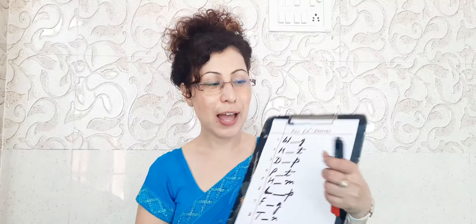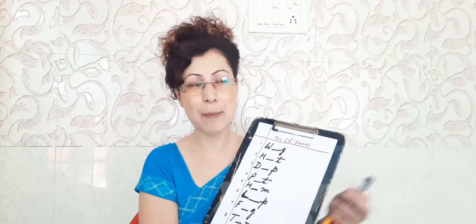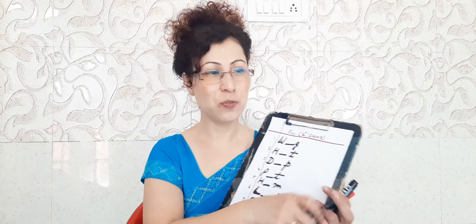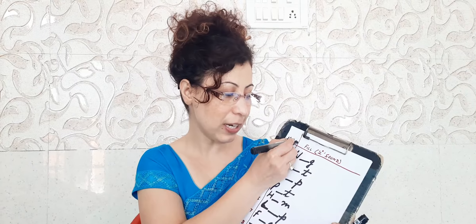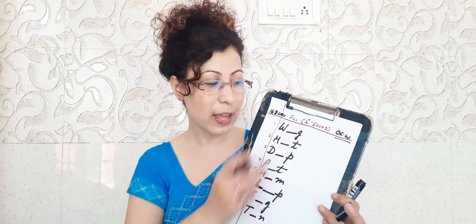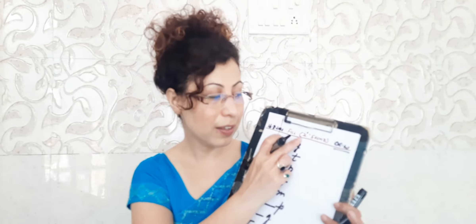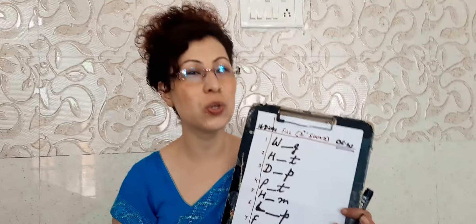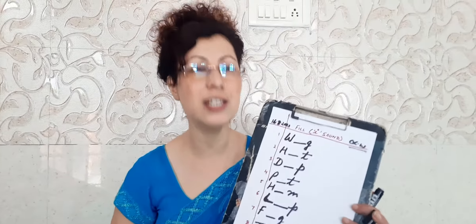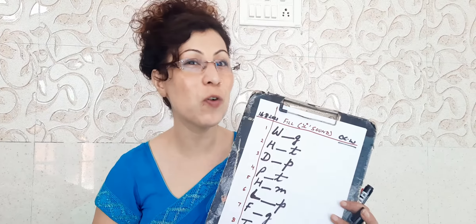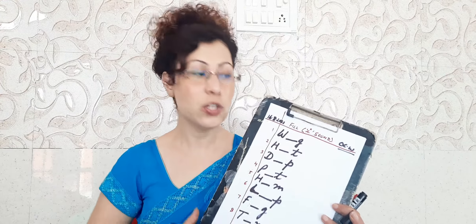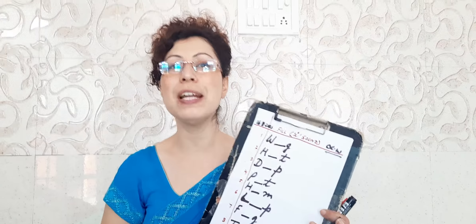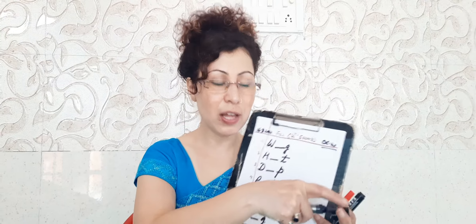So let's welcome to this class. Our first job is to write today's date. Today's date is 16.8.2021, class work. The heading will be: Fill small I sound. We are going to use this. I gave you a total of eight words where you have to use the vowel I to complete each word. So you have to fill the vowel I to complete that word.